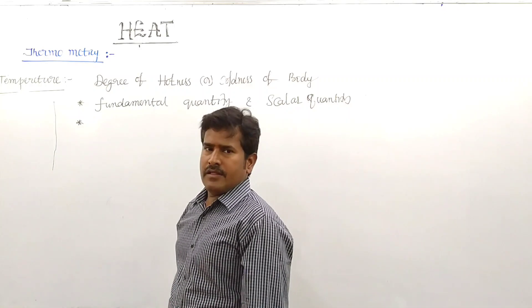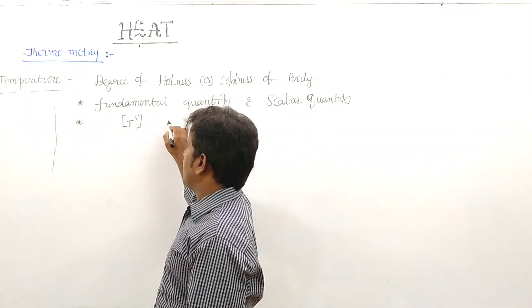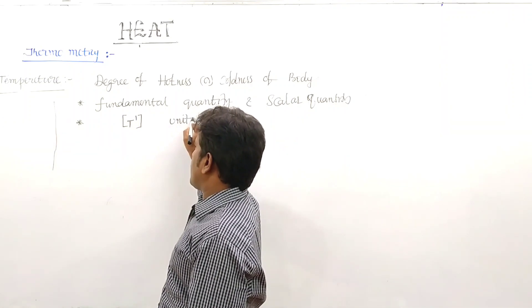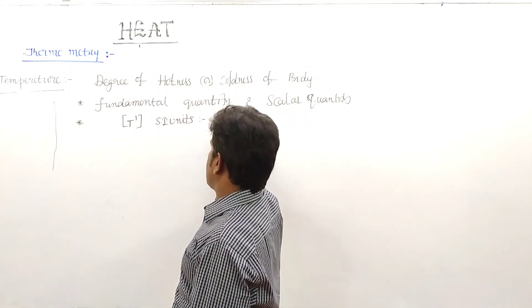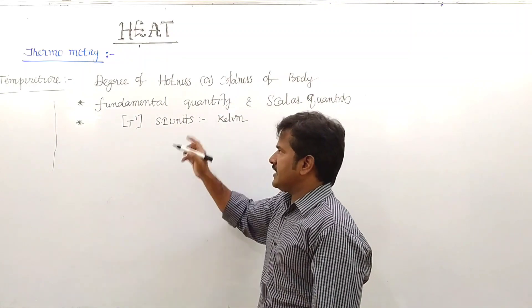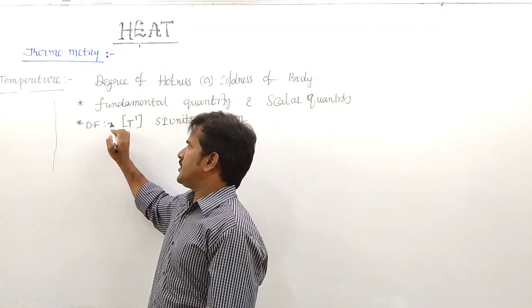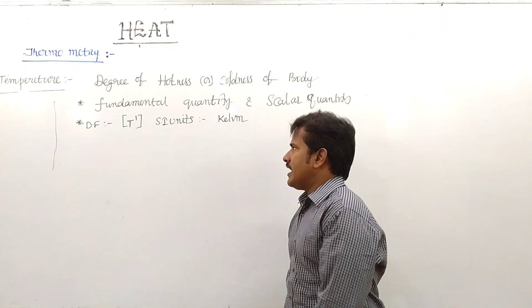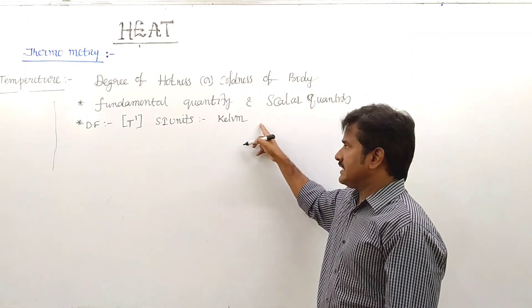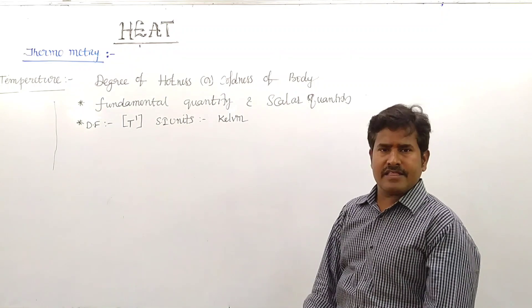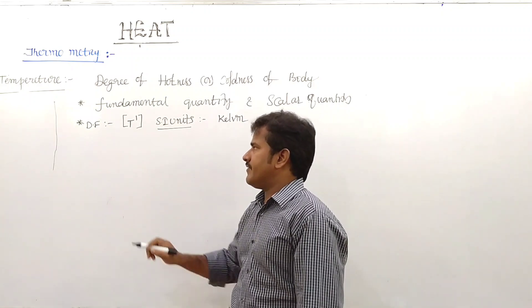Temperature has the dimensional formula T¹, and its SI unit is Kelvin. Sometimes degree Celsius is also used, but the SI unit is Kelvin.